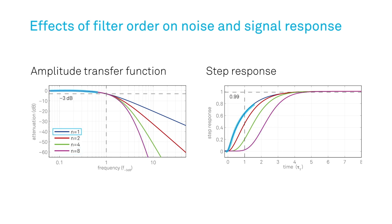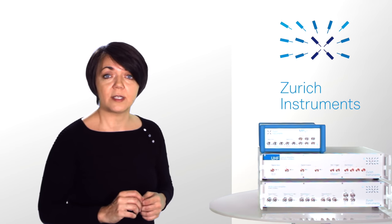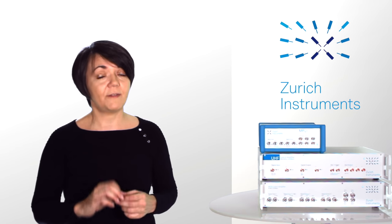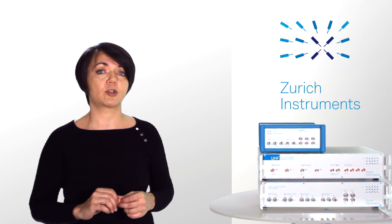A lower order filter has the advantage of causing less phase or temporal delay, which helps whenever highest speed requirements need to be met. The entire principle of mixing and low-pass filtering is called phase-sensitive detection, or demodulation.